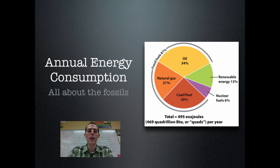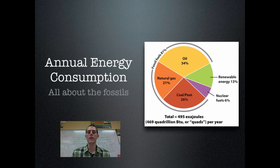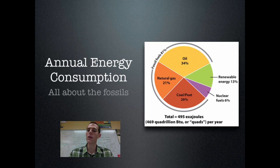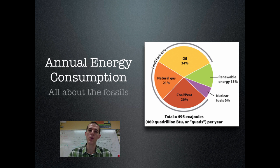Looking at annual energy consumption globally, oil accounts for 34% of the world's energy usage. Natural gas accounts for 21%. Coal and peat, things that are dug up and burned, account for 26%. Renewable energy is 13%, and nuclear fuel is 6%. If you add it all up, fossil fuels account for 81% of energy usage around the world — that's basically where the world gets its energy from.